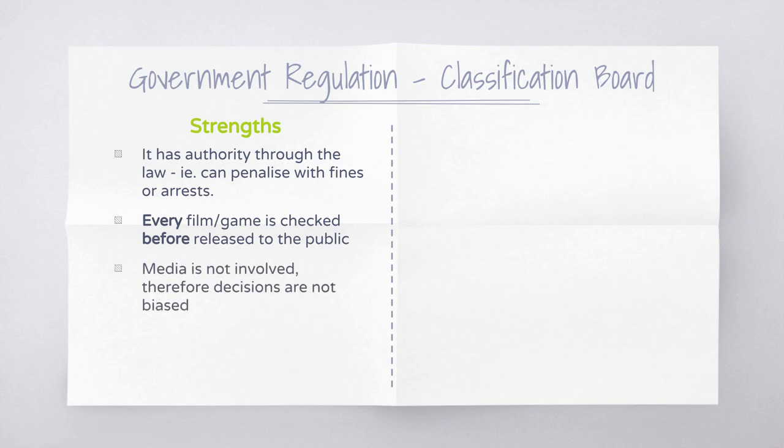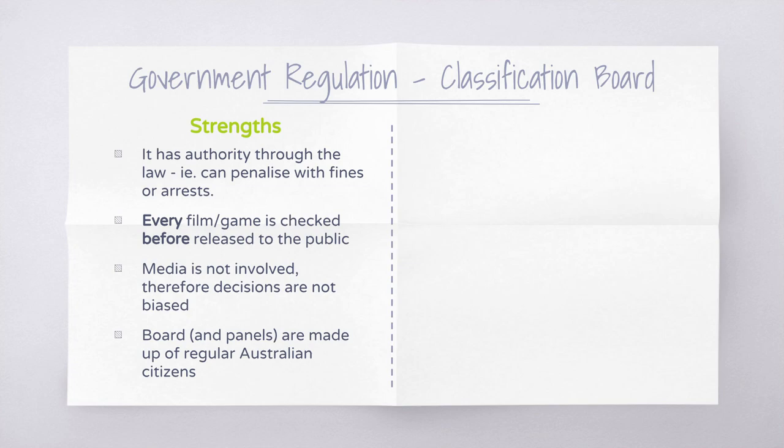Another strength is that the media industry is not involved in classification decisions, so they are not biased. In the ET example, the producers would naturally want a G rating for a broader audience, but removing that financial incentive means the government can assign a fair rating. Finally, a strength is that the board is supposedly made up of regular everyday Australian citizens, meaning it should reflect Australian values.